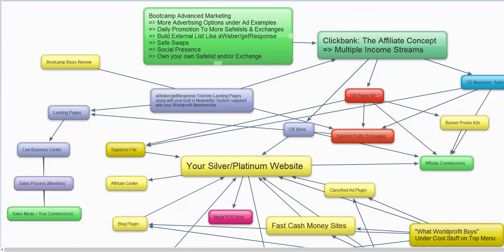Going forward, you will introduce people through your signature file. When you post to your newsletter, to your website, your Clickbank store, CB Promo Kit products — they might sign up in safe list exchanges underneath you. Your entire Silver Platinum website is tied in to you after you've started building a list.